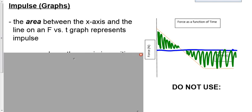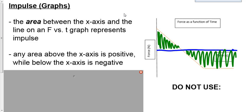One of those areas is above the x-axis, so it's going to be a positive area. The area below the x-axis is going to be a negative area. If we have a positive force, we should get a positive impulse. If we have a negative force below the x-axis, we should get a negative impulse.